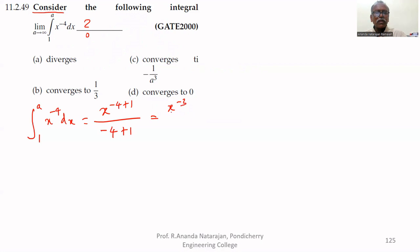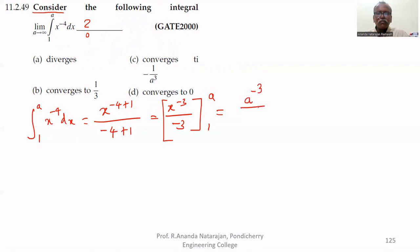That is x to the power minus 3 upon minus 3. Now we apply the limits from 1 to a: that is equal to a to the power minus 3 divided by minus 3, minus 1 to the power minus 3 which is 1 by minus 3. That simplifies to 1 by 3 minus a to the power minus 3 divided by 3.